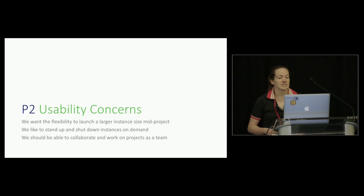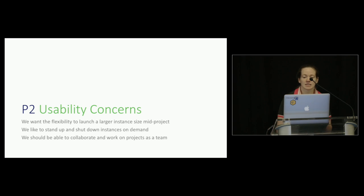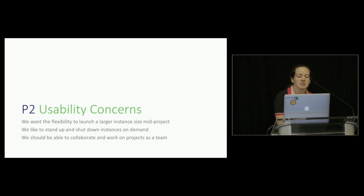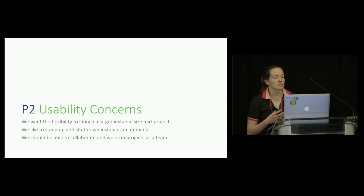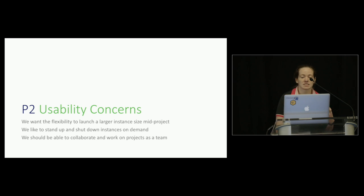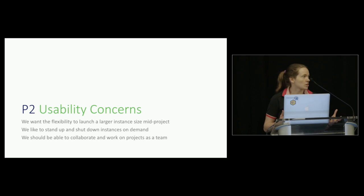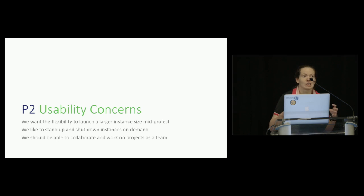Our final priority is a big one. We have three broad concerns around flexibility and instance sizes, cost savings for shutting things down at night and standing back up, and collaboration. But when working with R in the cloud, I quickly discovered there are a whole slew of very R-specific usability concerns that you run into very fast.